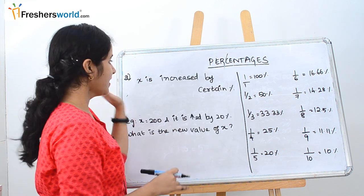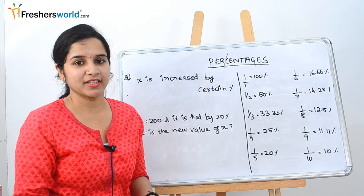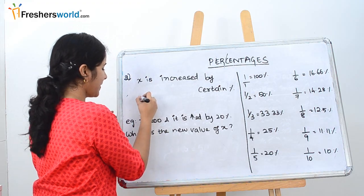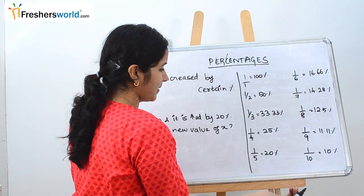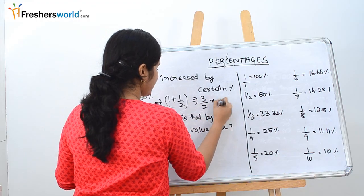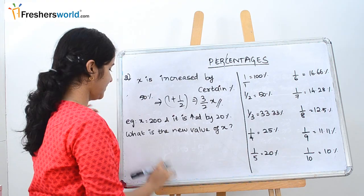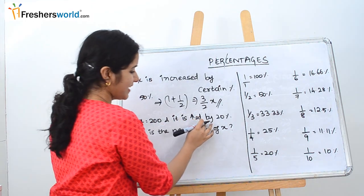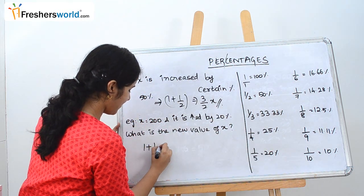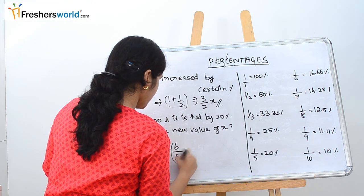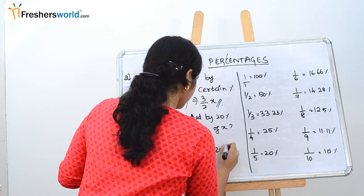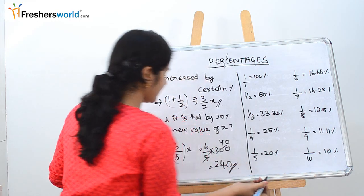The second type is: x is increased by a certain percentage — find the new value of x. For example, if x is increased by 50%, we know 50% is 1 by 2, so the new value is 1 plus 1 by 2, which is 3 by 2 of x. With a specific example: x is 200 and it is increased by 20%. 20% is 1 by 5, so the new value is 1 plus 1 by 5, which is 6 by 5. So 6 by 5 into 200 equals 240. The new value of x is 240.